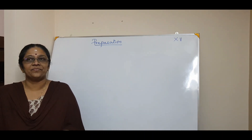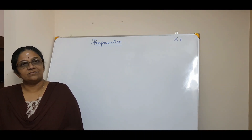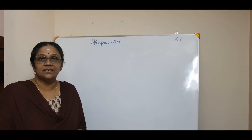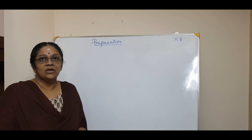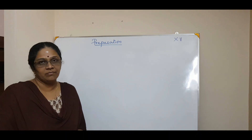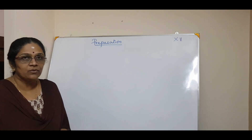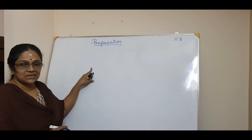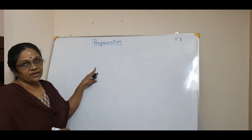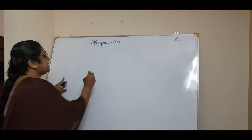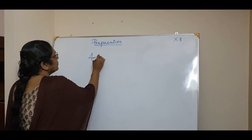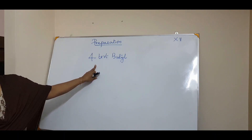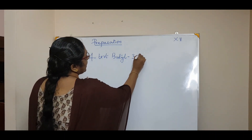Hello everyone. Today we will see the preparation of haloalkanes and haloalkenes, and before that the nature of the carbon-halogen bond. But first, let me clear some confusion in naming a compound: 4-tert-butyl-3-iodoheptane.